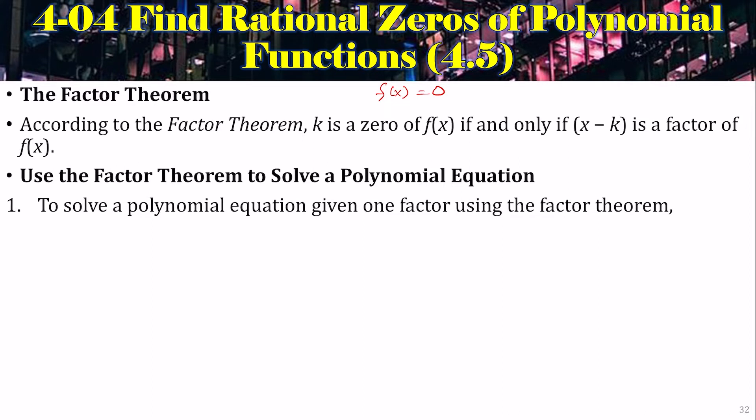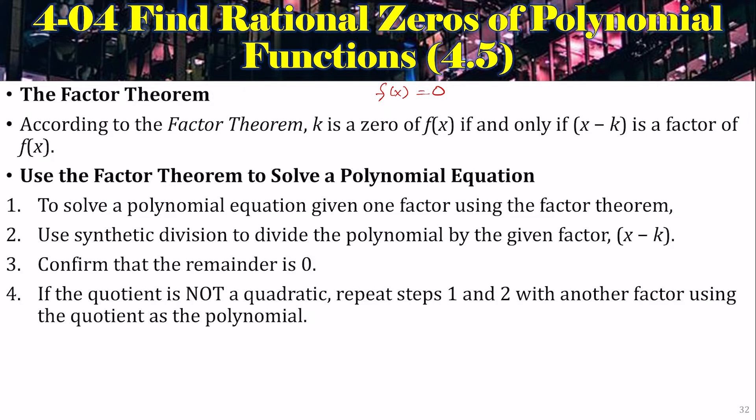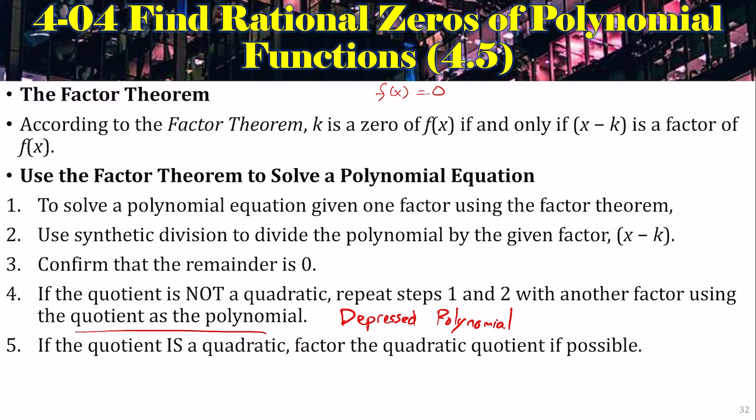Alright. So, use that to solve a polynomial equation. If you're given one factor, use synthetic division to divide by that factor and confirm the remainder is 0. If the quotient is not a quadratic, you repeat steps 1 and 2 with another factor, using the quotient as the polynomial. Remember I called these the depressed polynomial. Eventually your quotient will be quadratic or the depressed polynomial will be quadratic, which you can factor. And then to get the zeros, you set each factor equal to 0 and solve for x.